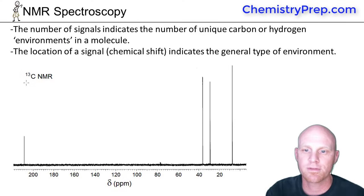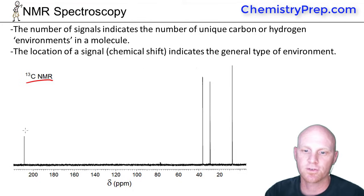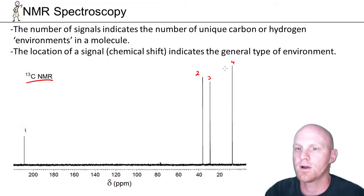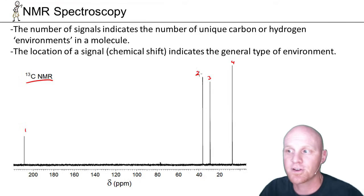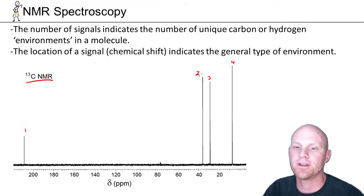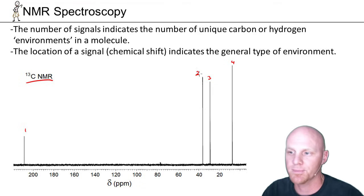Here we have an example of a carbon-13 NMR spectrum, and in this case we see four signals: one, two, three, and four. The number of signals indicates the number of unique carbon environments in the carbon NMR spectrum.